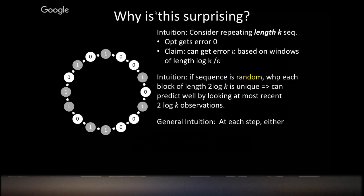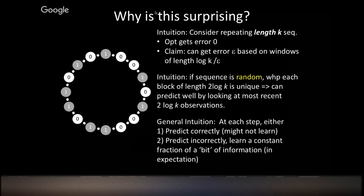For worst-case sequences, the argument is as follows. At every time step, one of two things happens. If you predict the next output correctly, that's good but you don't get a lot of information about where you are in the sequence. But if you predict incorrectly, you learn a constant fraction of a bit of information about where the sequence actually was. There are k hidden states, so you need log k bits to nail down which state you're in. You will make something like order log k errors, and with each error you get some fraction of a bit of information about where you are.